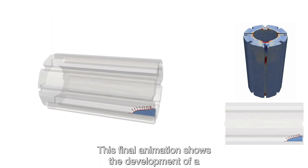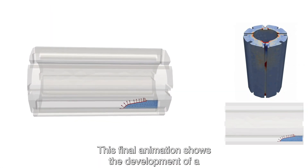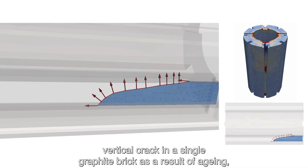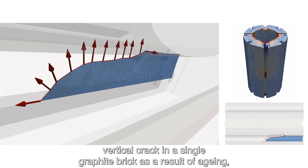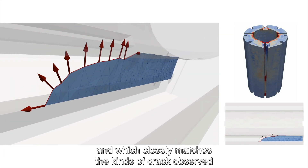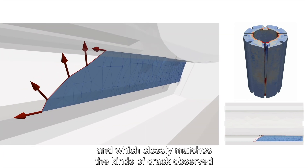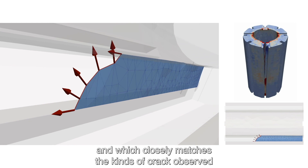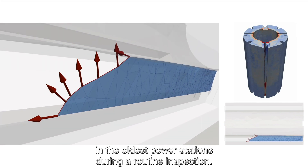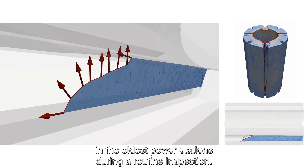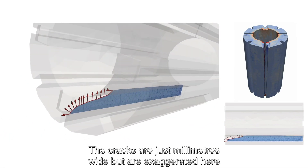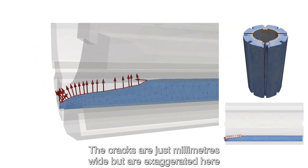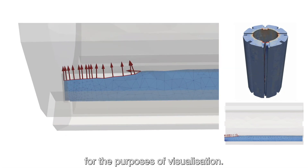And this final animation shows the development of a vertical crack in a single graphite brick as a result of ageing, and which closely matches the kinds of cracks observed in the oldest power stations during routine inspection. The cracks are just millimetres wide, but are exaggerated here for the purposes of visualisation.